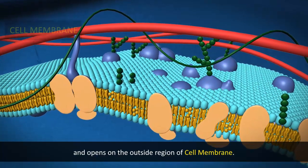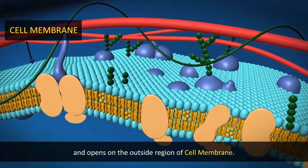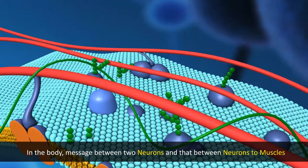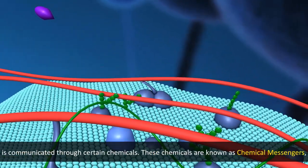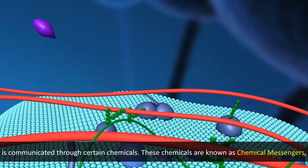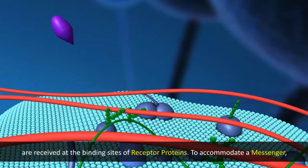This opens on the outside region of the cell membrane. In the body, messages between two neurons and between neurons to muscles are communicated through certain chemicals. These chemicals are known as chemical messengers and are received at the binding sites of receptor proteins.